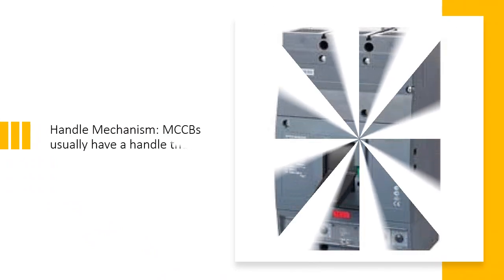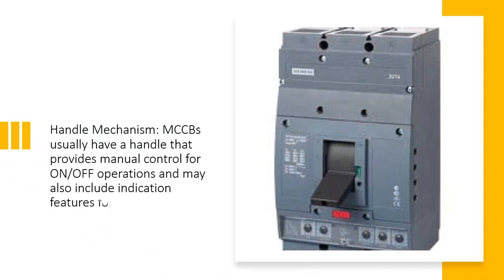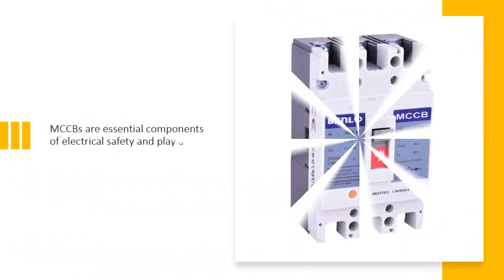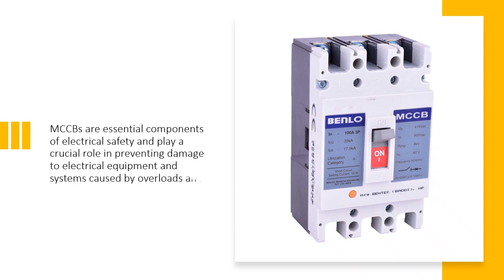6. Handle Mechanism — MCCBs usually have a handle that provides manual control for on-off operations and may also include indication features for fault status. MCCBs are essential components of electrical safety and play a crucial role in preventing damage to electrical equipment and systems caused by overloads and short circuits.